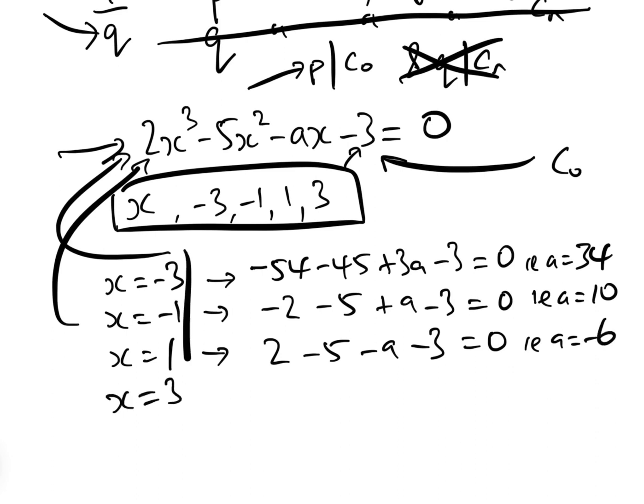And then finally, x equals 3. These are the only four possible integer solutions, remember, of the equation. We have 54 minus 45 minus 3a minus 3 equals 0, i.e. a equals 9 minus 6 minus 3, 2.